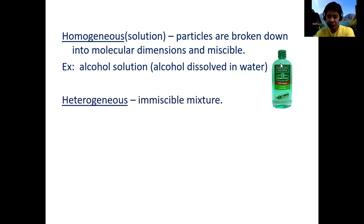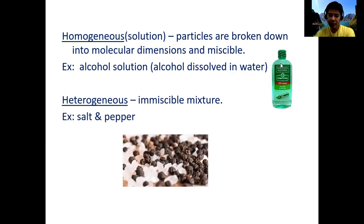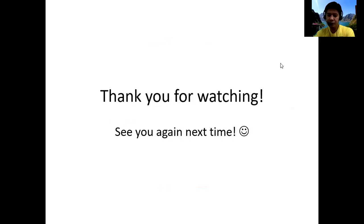For heterogeneous mixtures, they are immiscible mixtures — meaning if you combine two substances, you can still identify which is which by their appearance. For example, combining salt and pepper forms a heterogeneous mixture. That's it for this lesson video — thank you for watching and see you again next time.